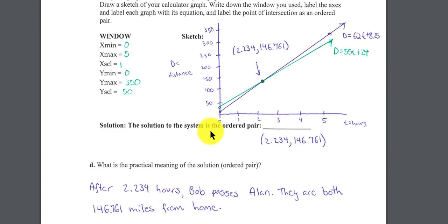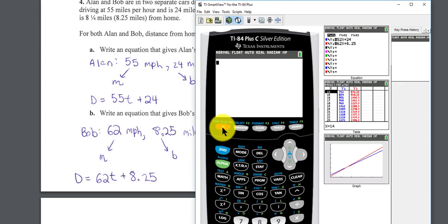Once we graph this, in our calculator, you remember, you're going to press 2nd, trace, number 5 for intersection, and you'll end up with this point. So let me open my calculator and just show you quickly.